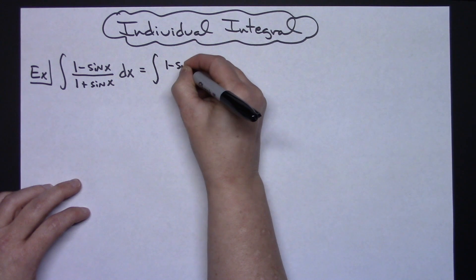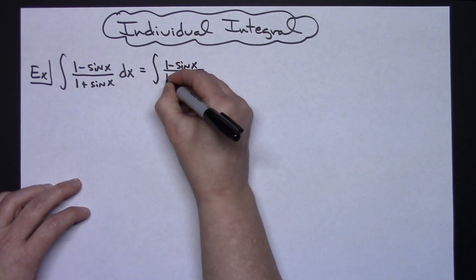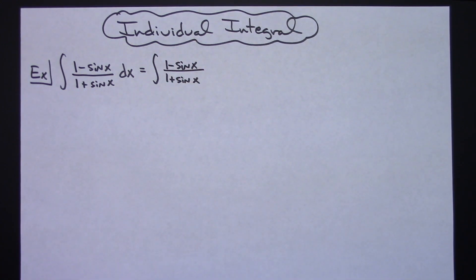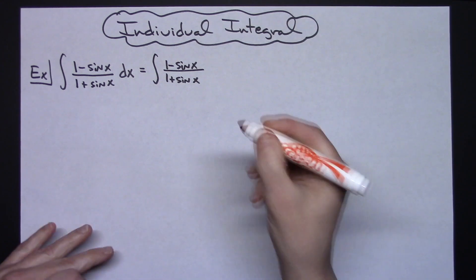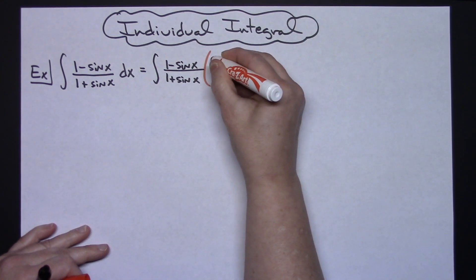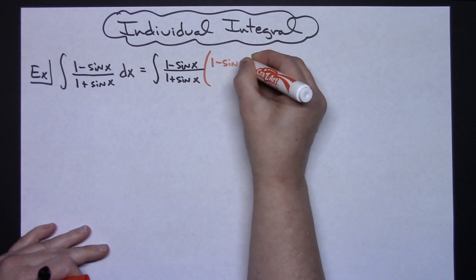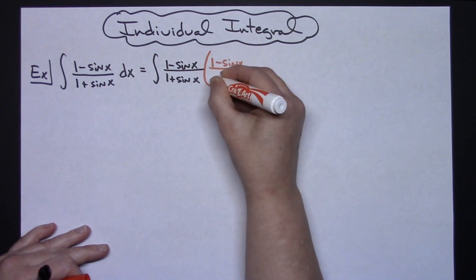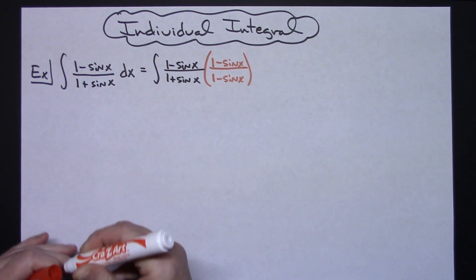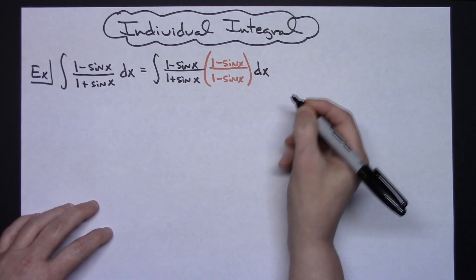So we have (1 minus sine x) over (1 plus sine x), and we'll show that multiplication: multiplying by the conjugate (1 minus sine x) over (1 minus sine x), and then dx.